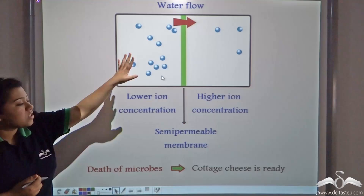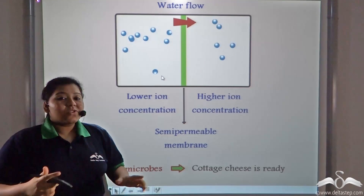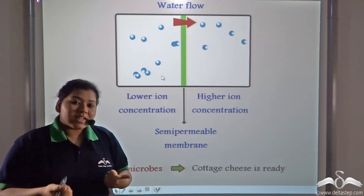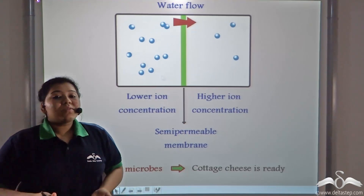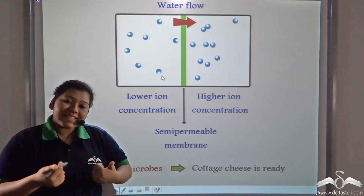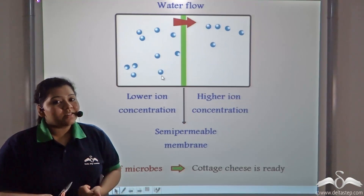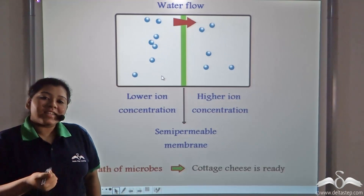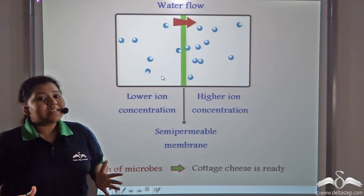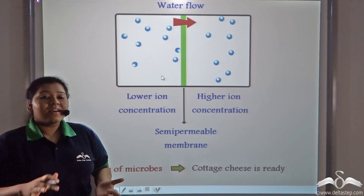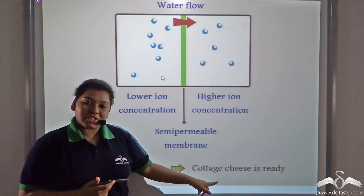Because of osmosis, water is drawn out, so there is no water content present in the curd. The bacteria that was growing inside the curd cannot grow any further and finally dies. At the end of this process, curd converts into cottage cheese.